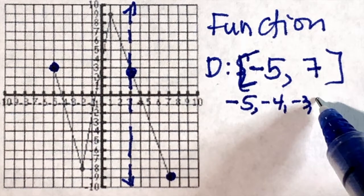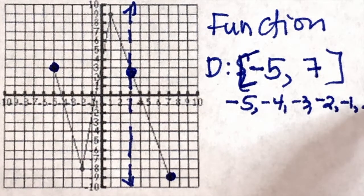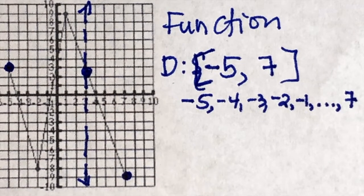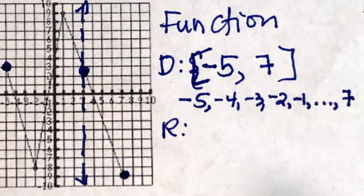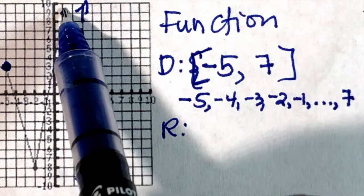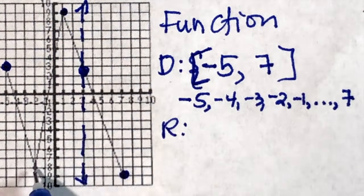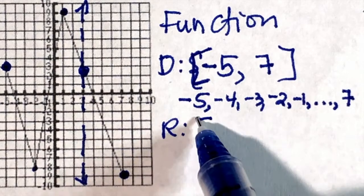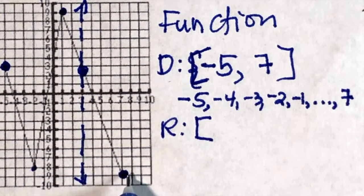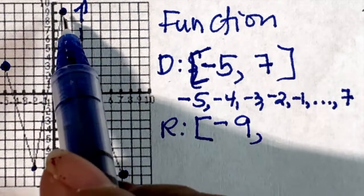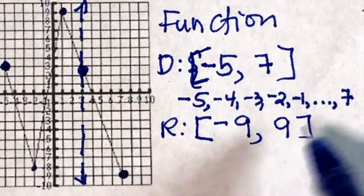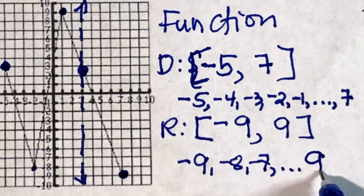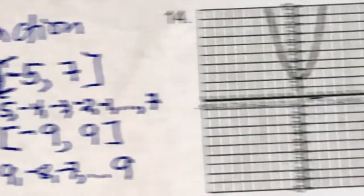The domain covers negative 5, negative 4, negative 3, negative 2, negative 1, and so on until 7. How about the range? The range is your y-values. Looking at the peak and lowest points — positive 9 at the top and negative 9 at the bottom, both closed circles — your range is from negative 9 to positive 9.